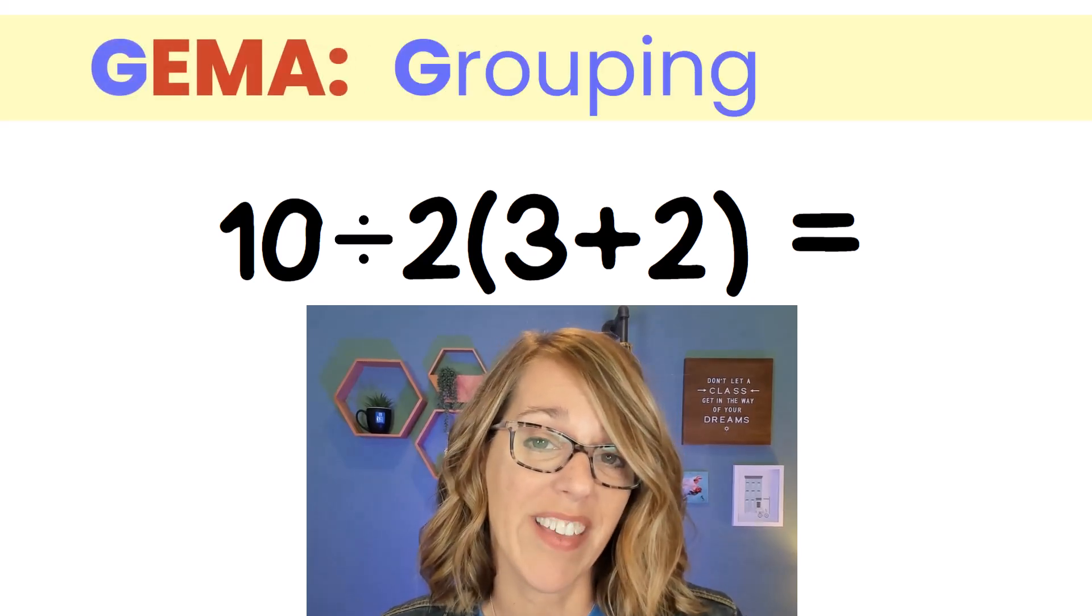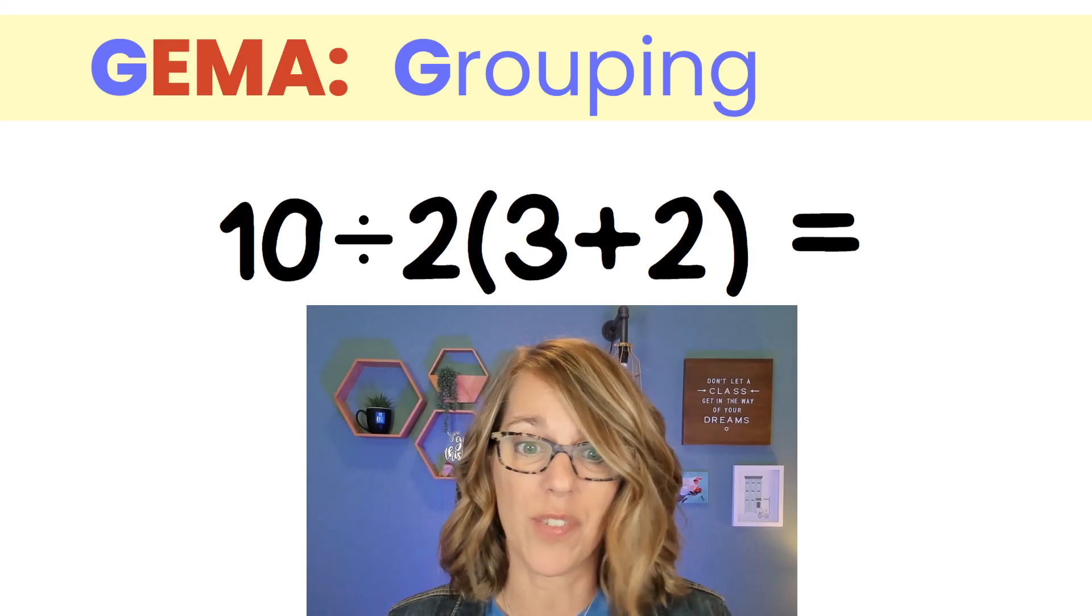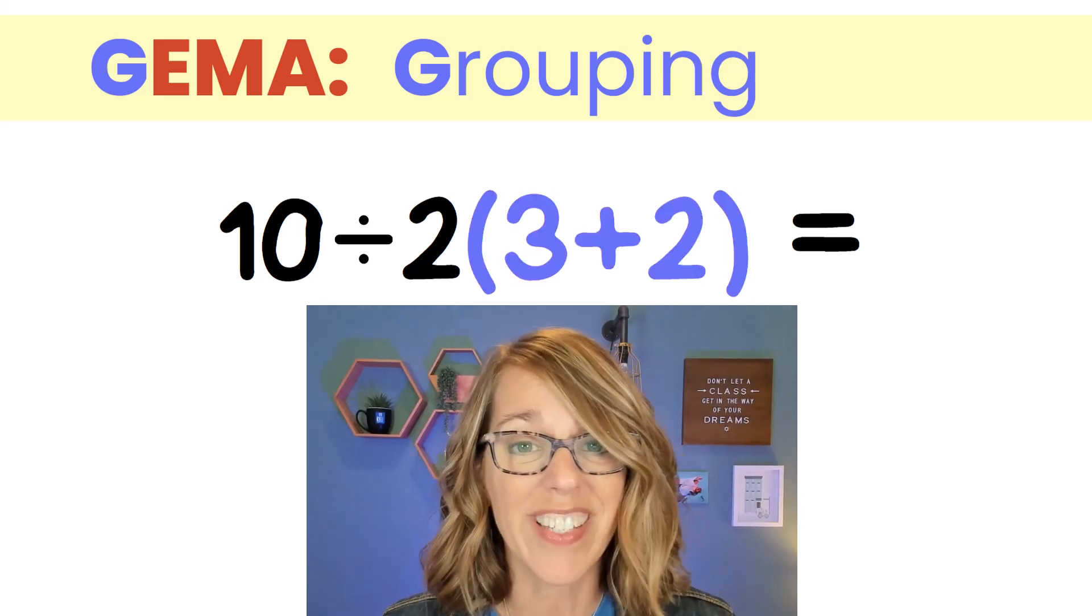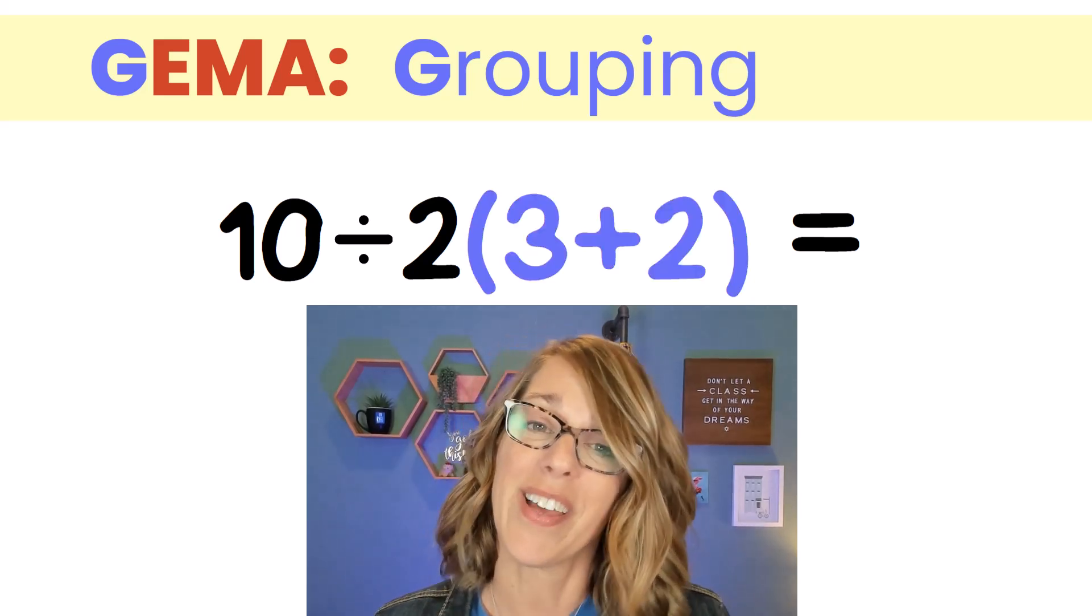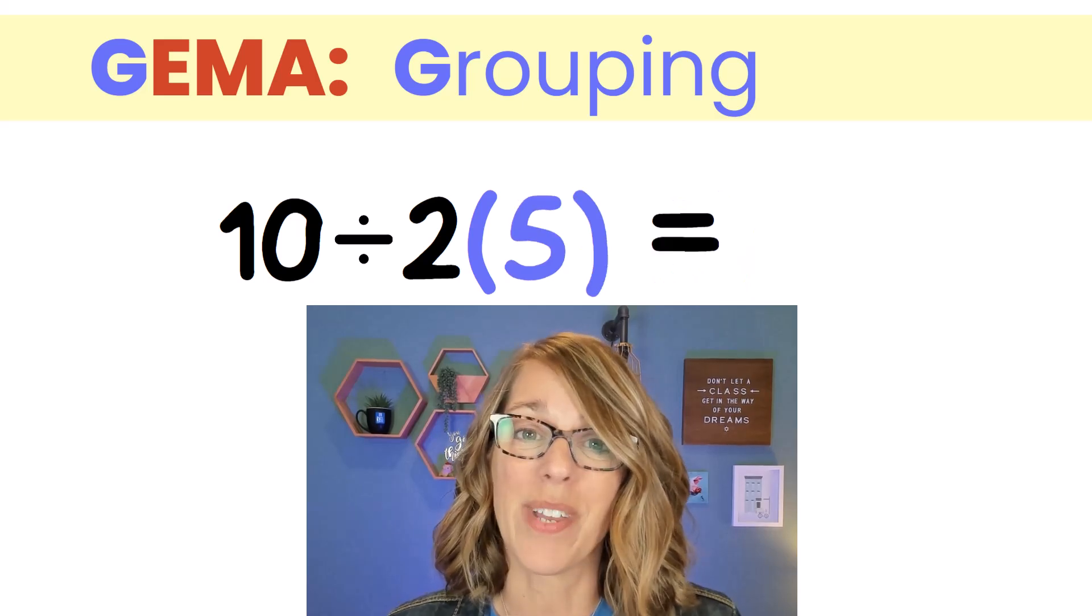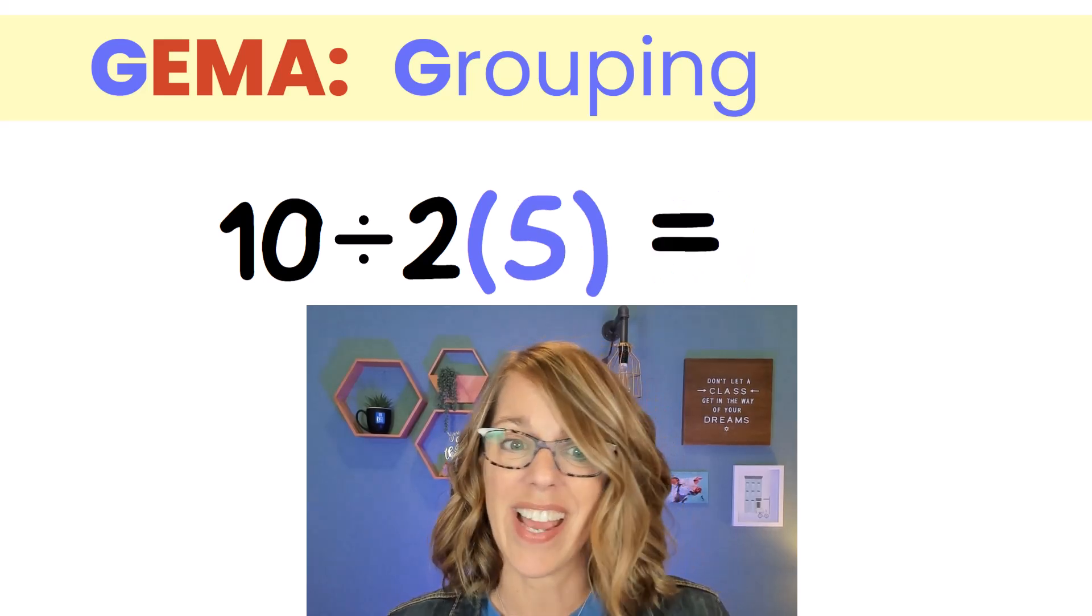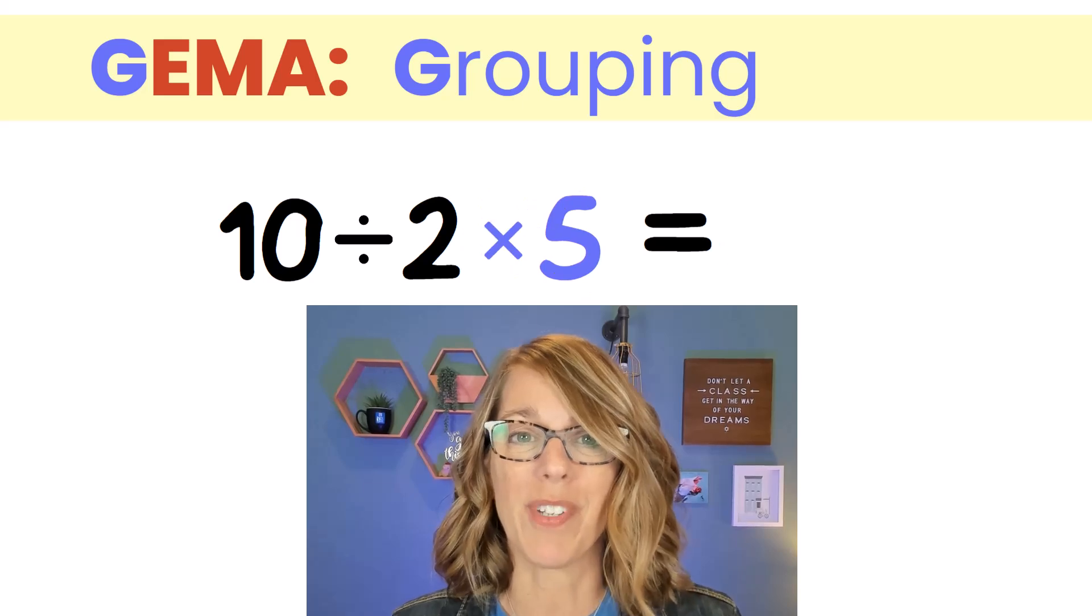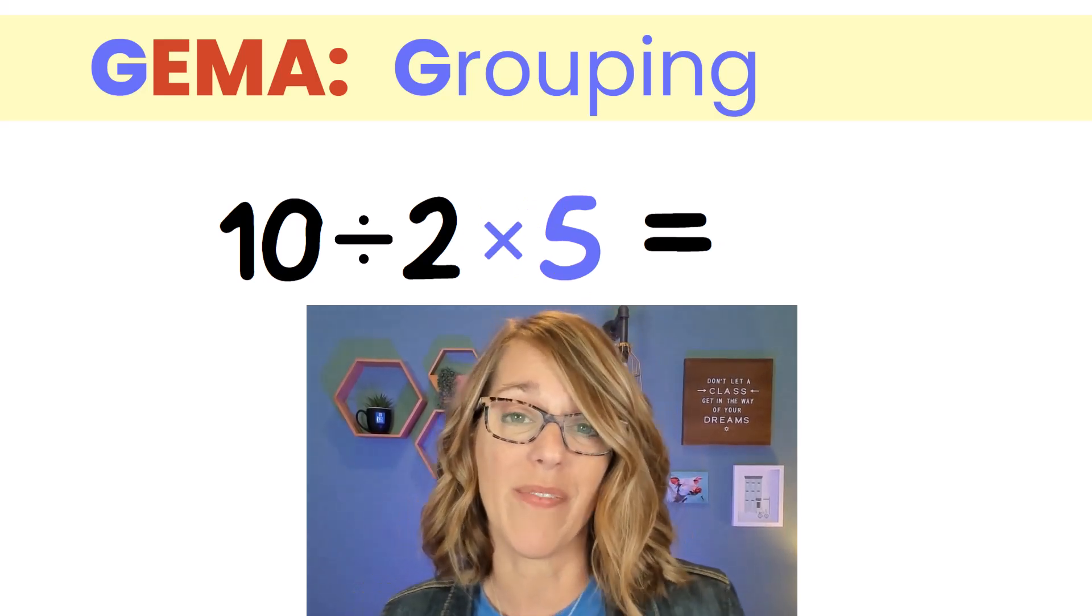We're going to start with a G in GEMA, and that stands for grouping. We've got just one group, and that's our parentheses, three plus two. Let's go ahead and add these together. We get five, and I don't need those parentheses anymore, so I'm just going to change that into times five.